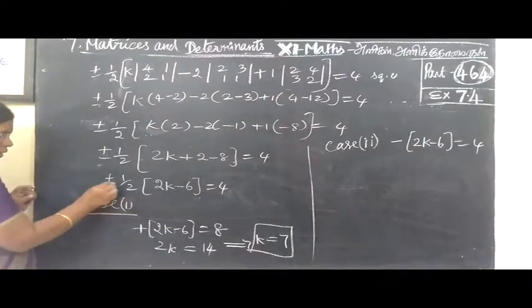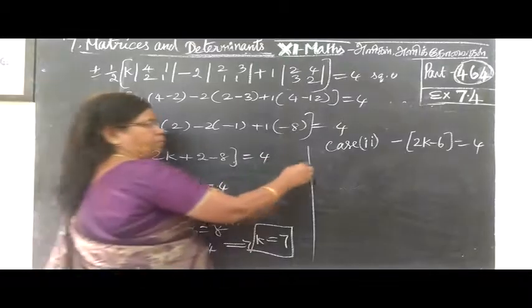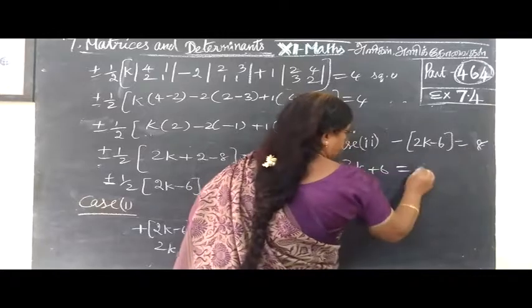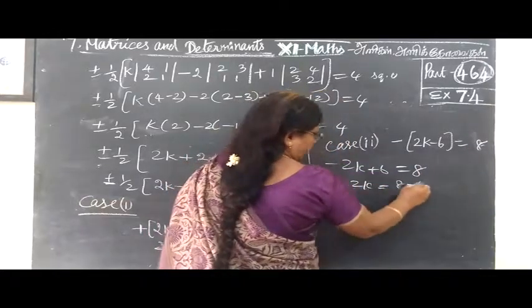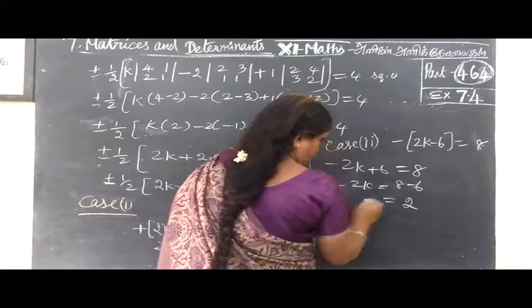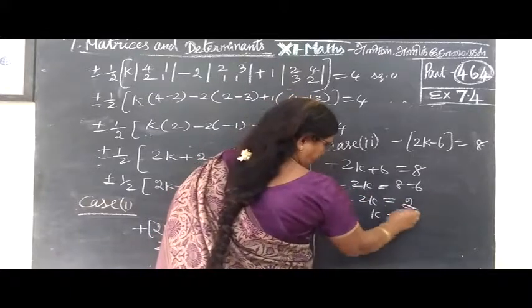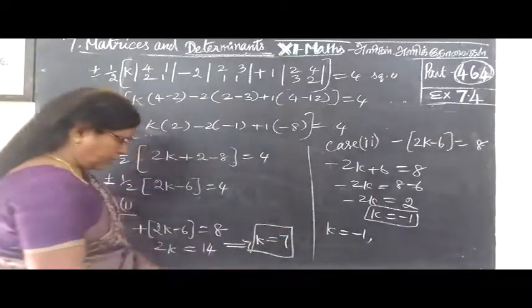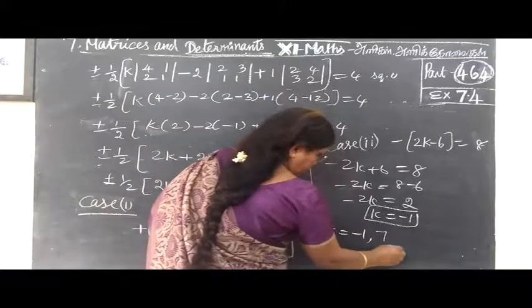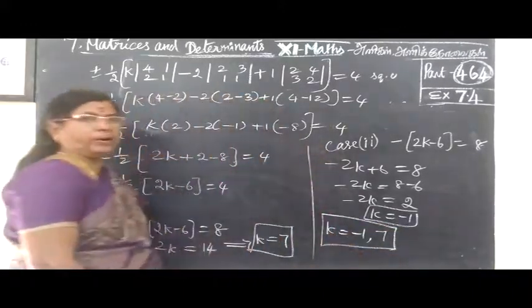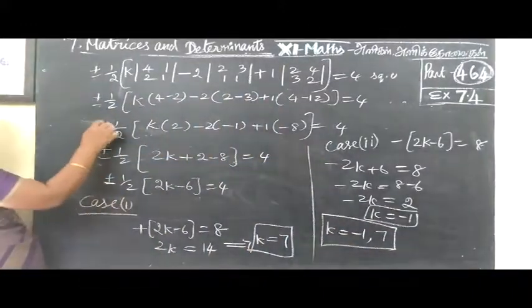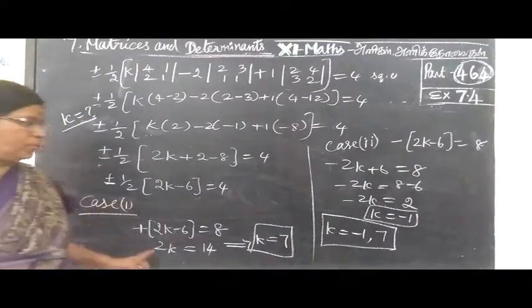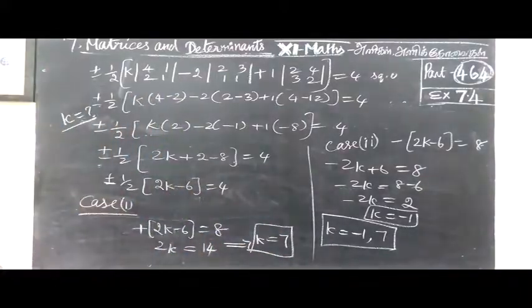Next, minus is equal to minus. So minus is equal to no need to write. So minus 2K plus 6 equal to no need to write. So minus 2K equal to 8 minus 6 is 2. Which implies K equal to minus 1. Therefore, K equal to minus 1, 7. So in this answer, government requirement is plus or minus. So in this case, we have two cases. Case 1 and case 2. How many are you finding the two words?